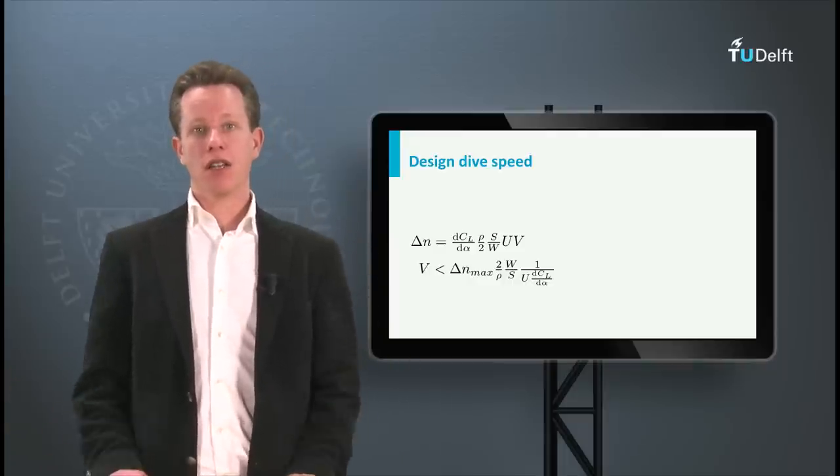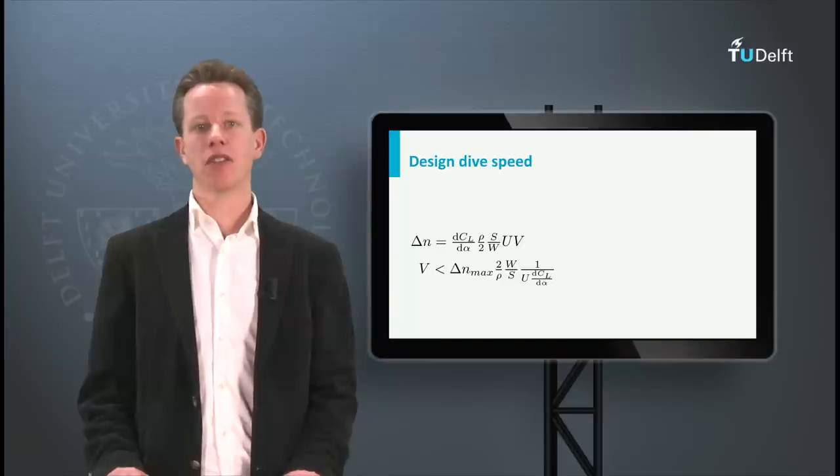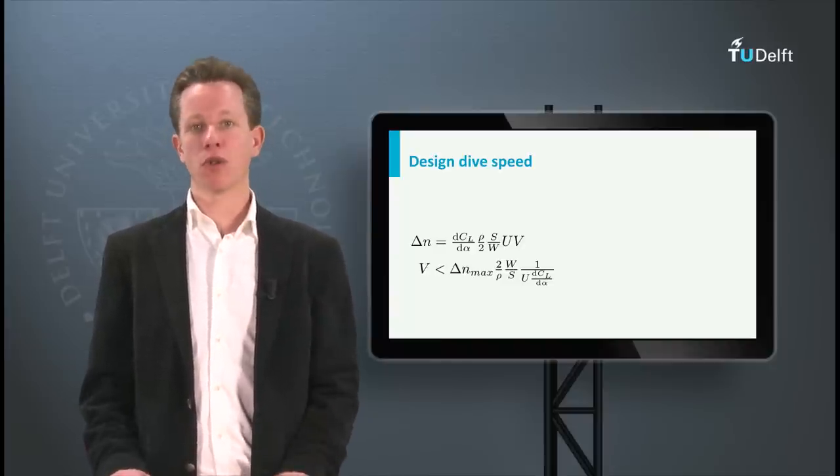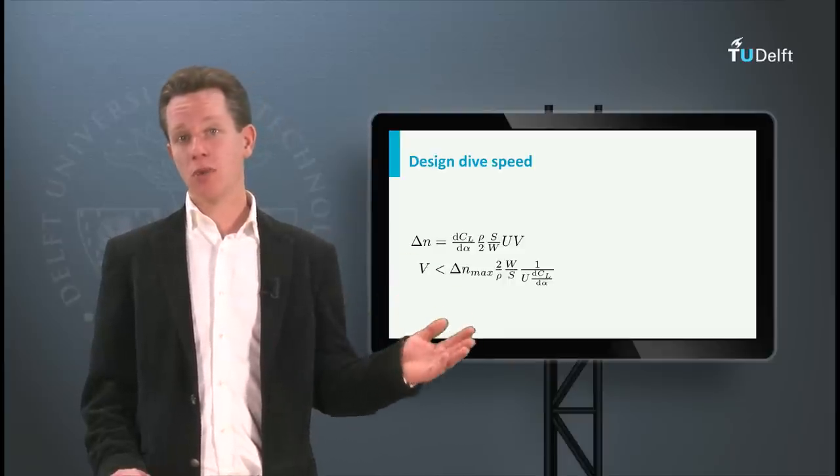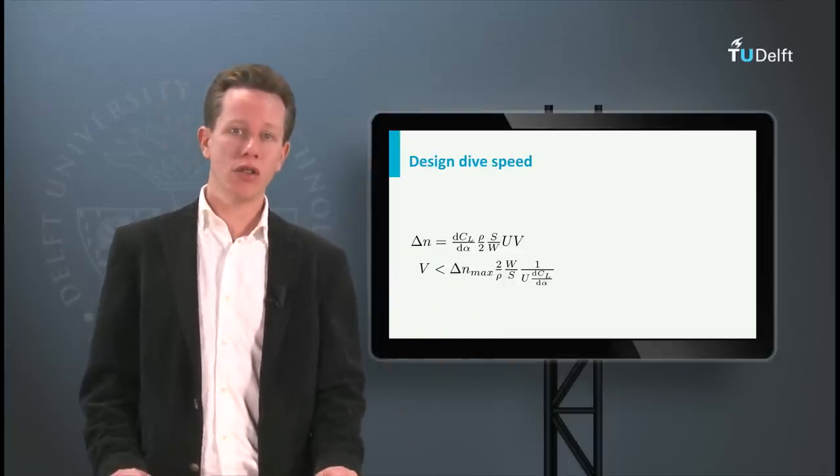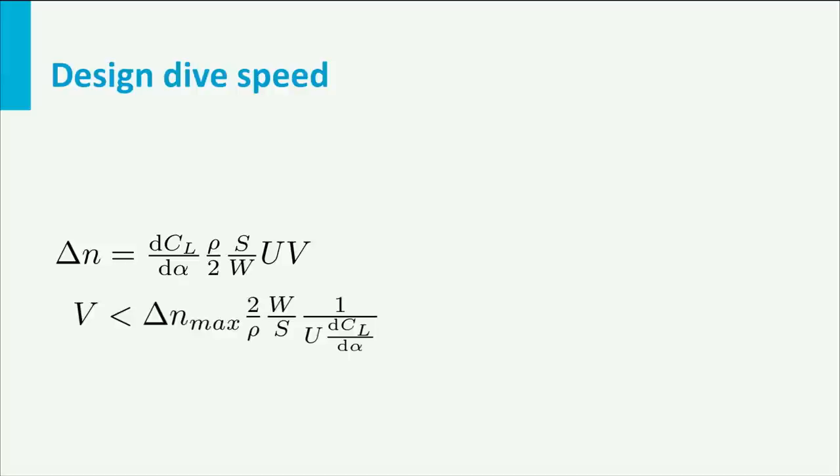So concluding, the airframe is designed for a specific load factor. Typically, this is 4 times the gravitational acceleration. This is a typical number for commercial aircraft. This limit load factor determines in combination with the aircraft weight, wing surface area, aerodynamic lift curve, and the maximum speed at which the aircraft is able to withstand a positive or negative gust of 25 feet per second. This limit is what we call the design diving speed. The design diving speed increases with increasing altitude. This speed limit should of course never be exceeded.